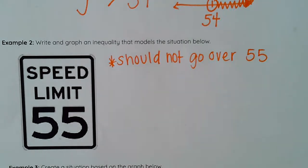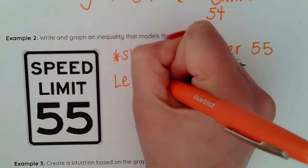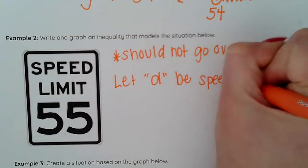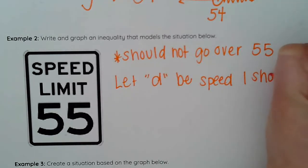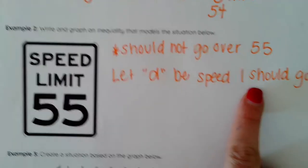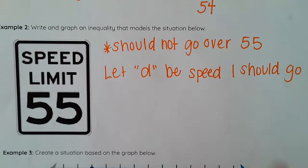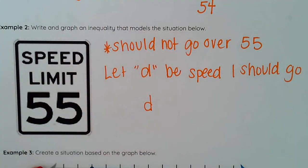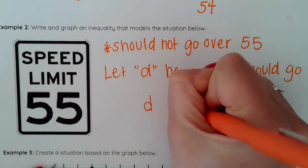So again I'm going to start off with a let statement. Let D be speed I should go. Again I do understand that people will go over that but we're going to talk about what I should be doing per the law per the sign here. I've got D and then the start of my solution set is 55.